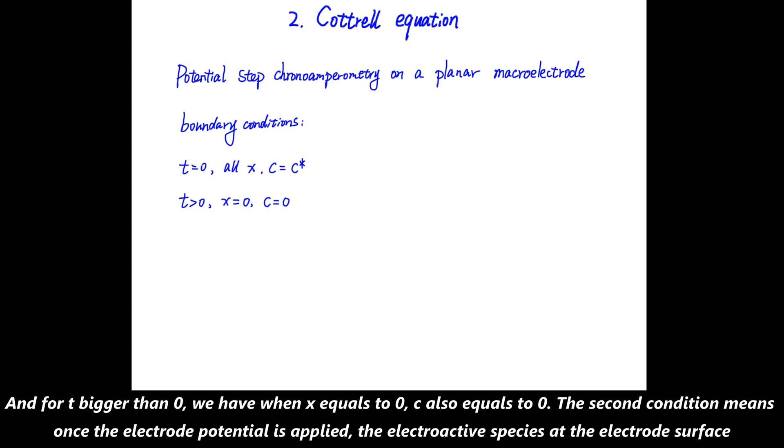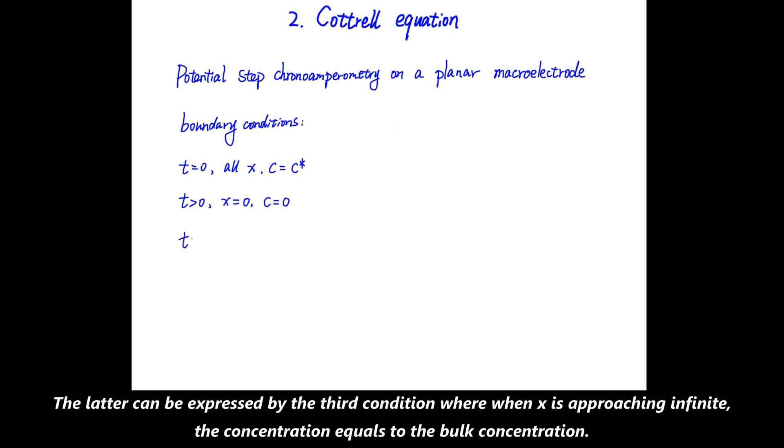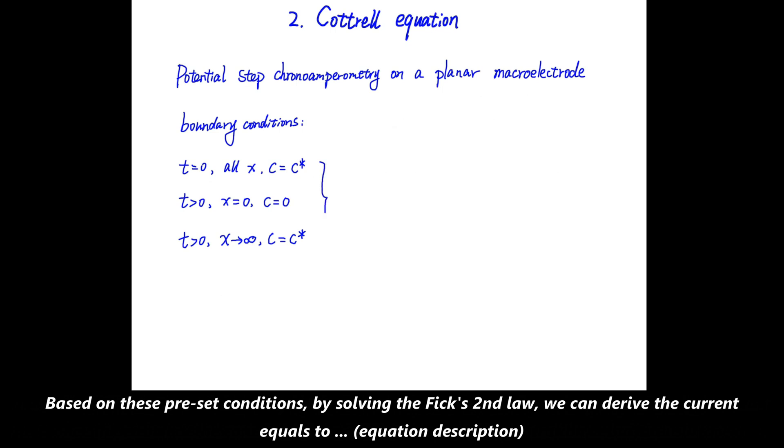The second condition means once the potential step is applied, the electroactive species at the electrode surface is immediately depleted, such that the materials are fully supplied by diffusion from the bulk solution at a very long distance away from the electrode surface. And the latter can be expressed by the third condition, where when x is approaching infinite, the concentration equals to the bulk concentration. Based on these preset conditions, by solving Fick's second law, we can derive...